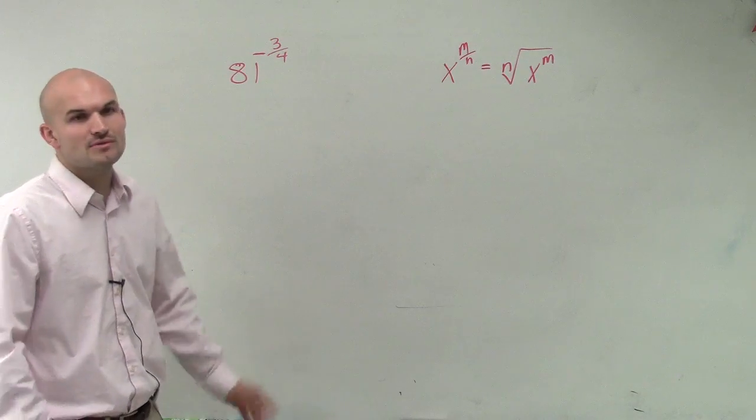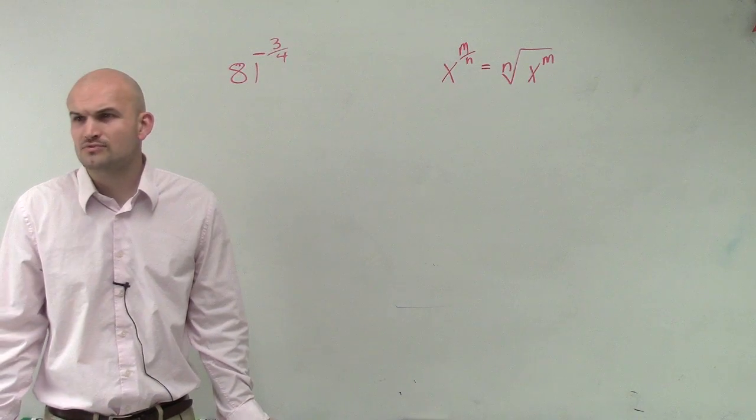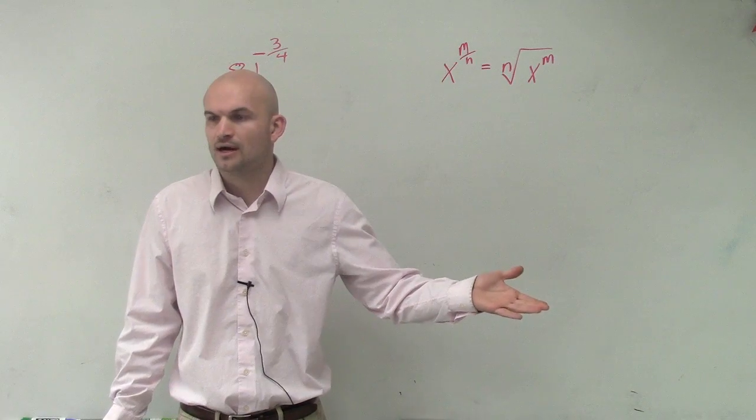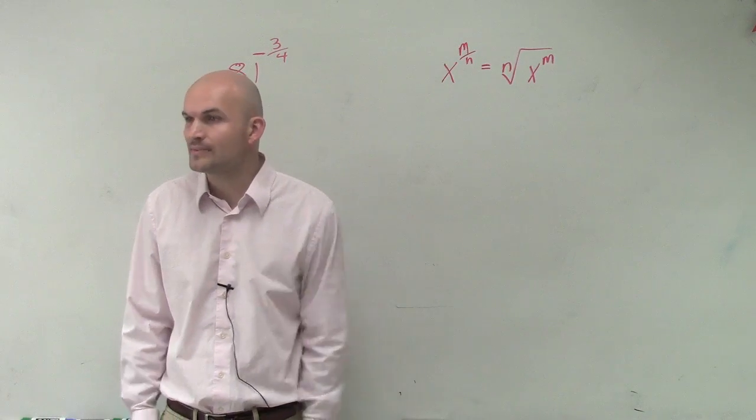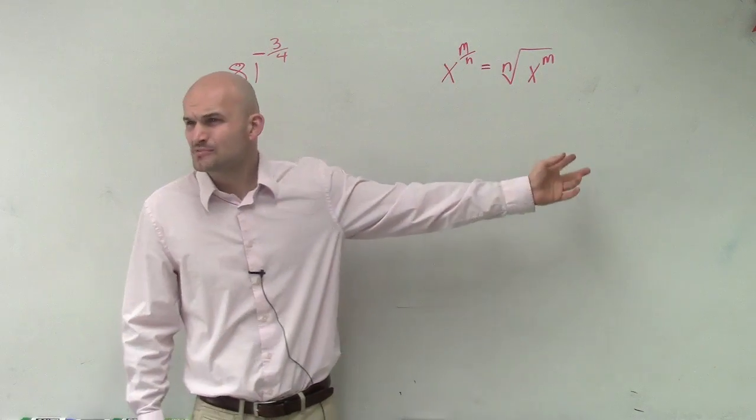So now we can go and apply this. But here comes the problem. We have a negative 3 fourths. What do I do with a negative 3 fourths? Which one's negative? Because remember, it could be negative. The numerator could be negative, or the denominator could be negative. So which one do I make negative? Do I make the root negative? Do I make the exponent negative?